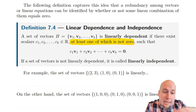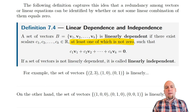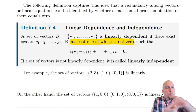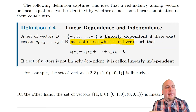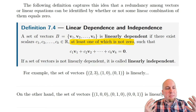If you cannot find a non-trivial linear combination like this, then the set is linearly independent. Roughly speaking, that means each vector gives you a new dimension — each vector is pointing in a genuinely different direction than all of the previous vectors. There are no redundancies; each one contributes something non-trivial to the span.